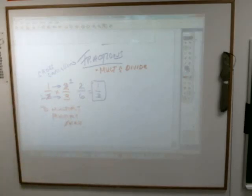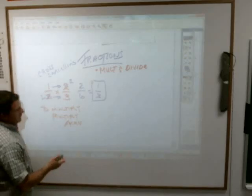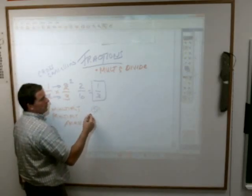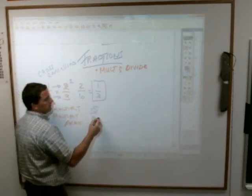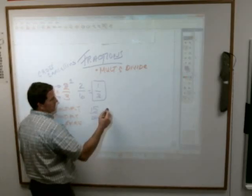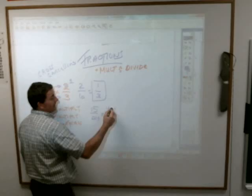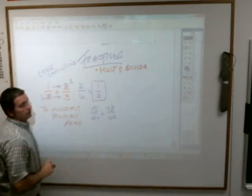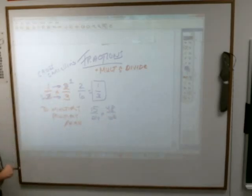You should have seen that there's a two on top and a two on the bottom. It's like reducing before you multiply. Since these are both twos you can divide them both by two, and you end up with ones there, then one times one is one and one times three is three, so you end up with one third right there.